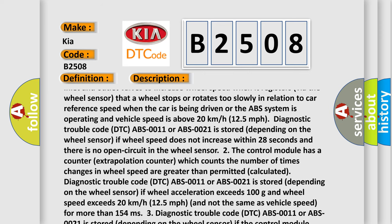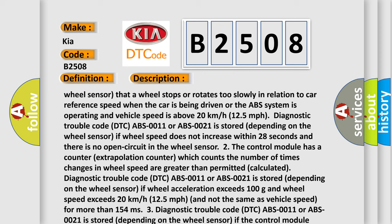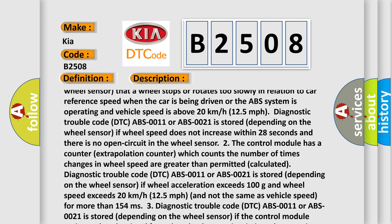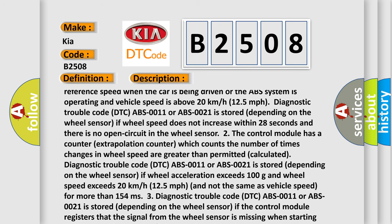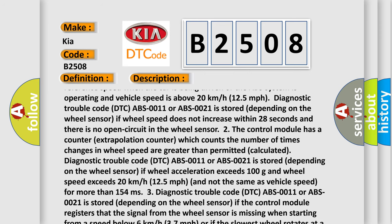If wheel speed does not increase within 28 seconds and there is no open circuit in the wheel sensor, the control module has a counter (extrapolation counter) which counts the number of times changes in wheel speed are greater than permitted.